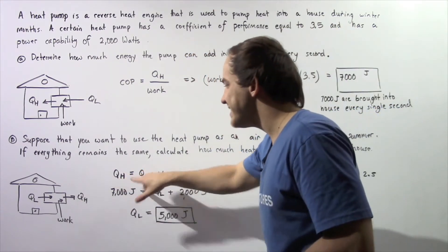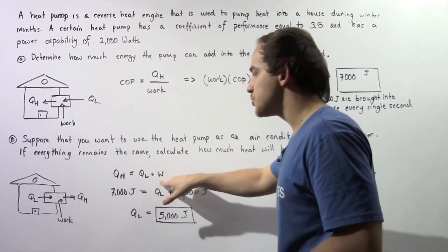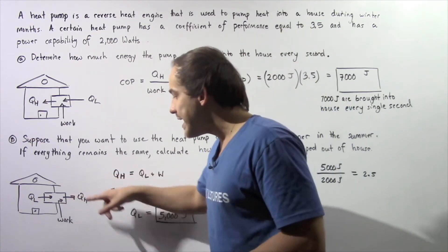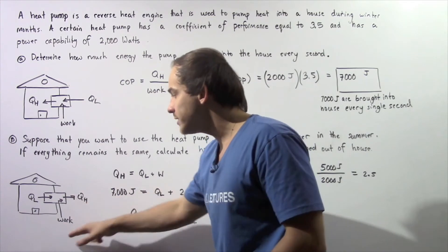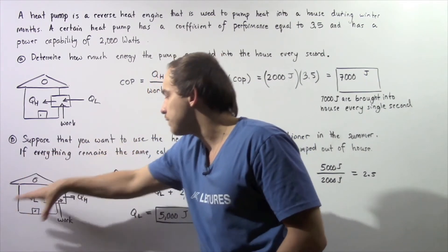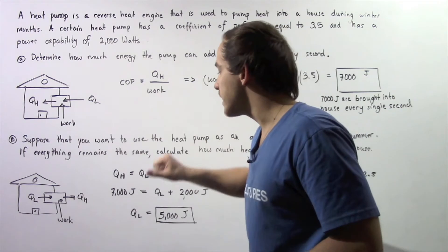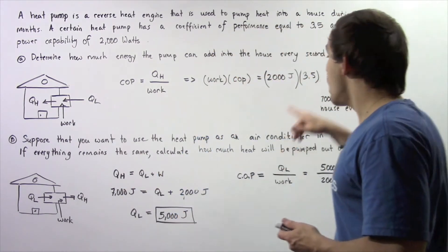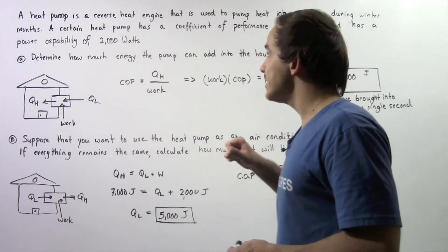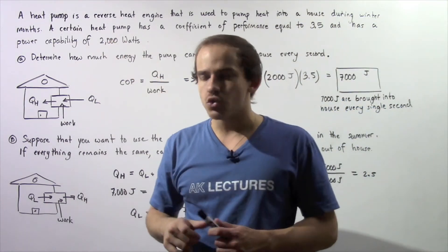Our QH is equal to QL plus W. The QH, all the energy that comes outside, is equal to the work done plus the heat flow from the inside. We know from part A that QH is 7,000 joules and our W is given to be 2,000 joules.